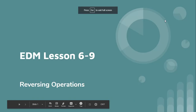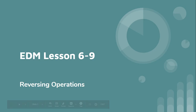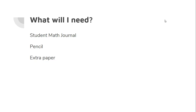Hello sixth grade. Today we're going to be working on EDM Lesson 6-9, Reversing Operations. What are you going to need for this lesson? You'll need your student math journal, a pencil, and probably some extra paper. Pause the video and make sure you have all of your materials.